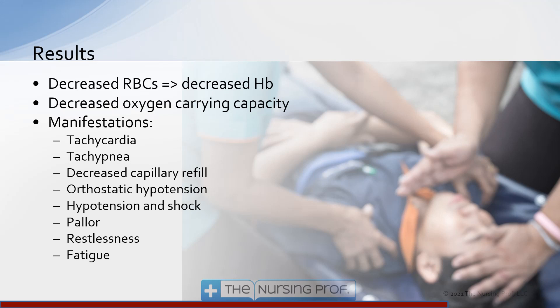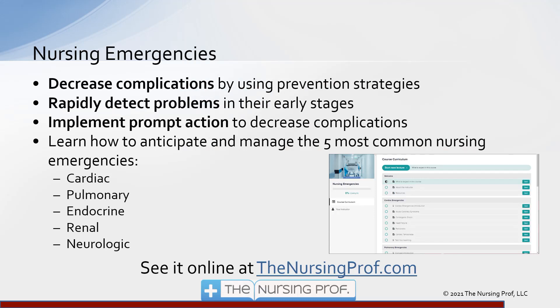The end result is a decrease in red blood cell production, causing decreased hemoglobin levels, which then results in decreased oxygen-carrying capacity and ultimately tissue hypoxia. The compensatory mechanisms for tissue hypoxia include tachycardia, tachypnea, decreased capillary refill, and potentially orthostatic hypotension — not necessarily volume-related, but related to the oxygen-carrying capacity of blood reaching the periphery and brain — as well as hypotension, shock, pallor, restlessness, and fatigue.